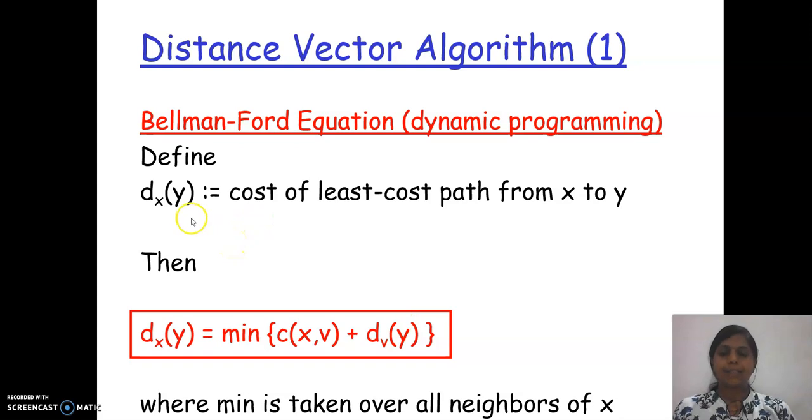The Bellman-Ford equation is given like this: least cost path from x to y is the minimum cost from x to v, where v is the neighbor, plus the minimum path from v to y. The sum is the minimum path from x to y.